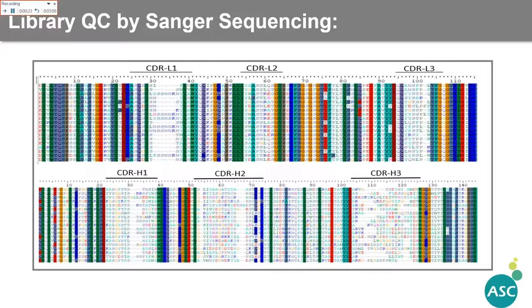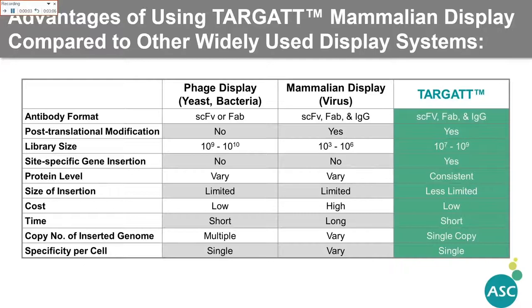The advantages of using targeted mammalian display compared to other widely used display systems such as phage display and mammalian display from virus is that the targeted integrated system can achieve site-specific insertion of a single copy of antibody into the human genome with uniform and stable expression. It also provides post-translational modification and has the ability to express full IgG formats, as well as low cost for high throughput screening.